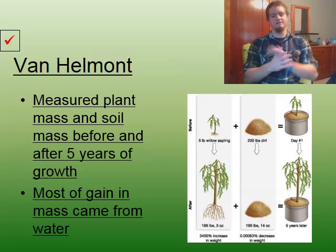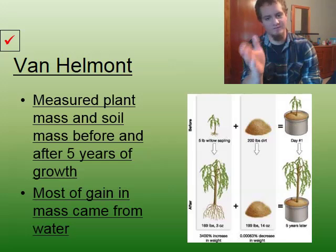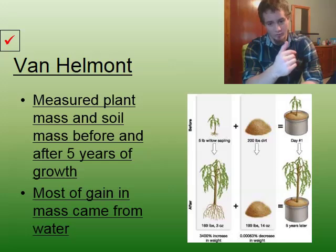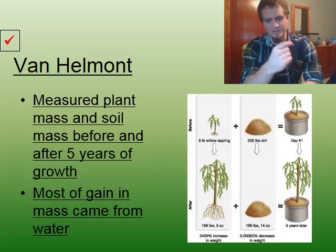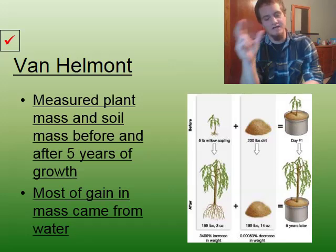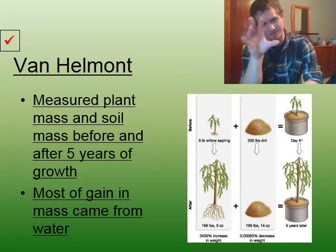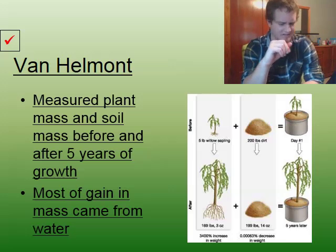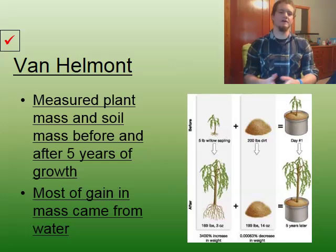After five years, he weighed the plant and dirt again. The willow went from five pounds to about 169 pounds and three ounces — a 3,400% increase in mass. Meanwhile, the dirt weighed 199 pounds and 14 ounces — only a 0.00063% decrease in weight. This showed that the soil, while necessary, is not responsible for feeding the plant. Most of the mass actually comes from water. If you think about plant cell structure, the vacuole absorbs the water, which is where most of the plant's mass comes from.